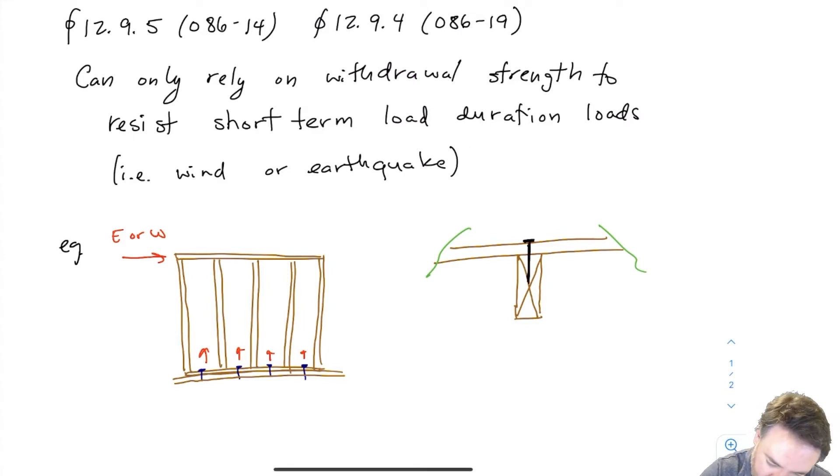Okay, then for wind uplift, so I might have some wind uplift on here, I can rely on the withdrawal resistance of that nail to prevent the sheathing from coming up off the roof for example on roofing. So there's a couple of examples.